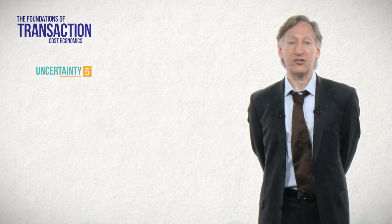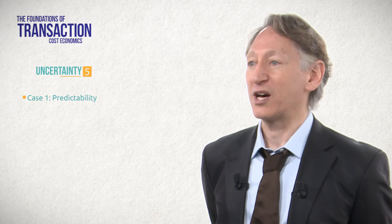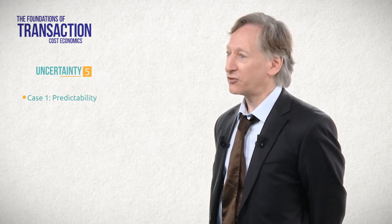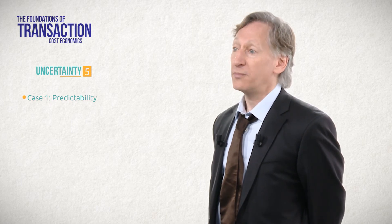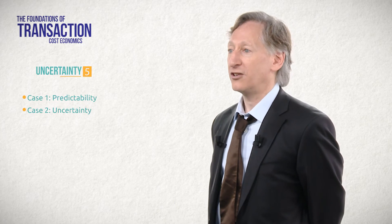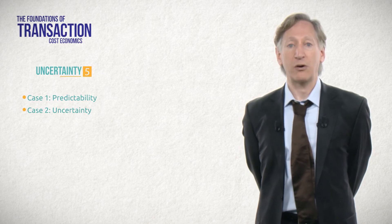Uncertainty exacerbates the problem of asset specificity. One way we might deal with asset specificity would be for you to insist on a long-term contract to guarantee a minimum volume of shipments and a minimum price. But contracts can never be complete, thanks to bounded rationality. In a setting with very low uncertainty — for example, if demand for my product is generally predictable and there is little uncertainty about the availability and cost of inputs — the risk of writing a contract that doesn't cover some unforeseen event is relatively small. But when uncertainty is high, it's more difficult to anticipate the set of events that might affect the contract. Hence, higher uncertainty in the presence of asset specificity increases the difficulty of managing our arrangement via a market contract.